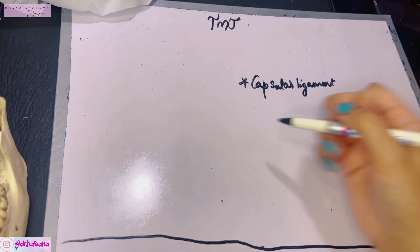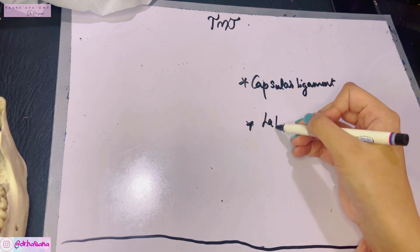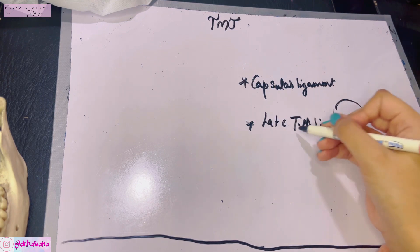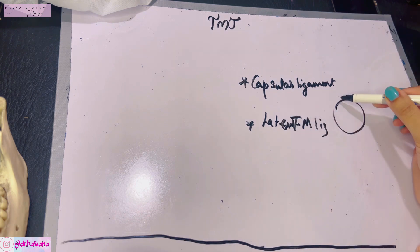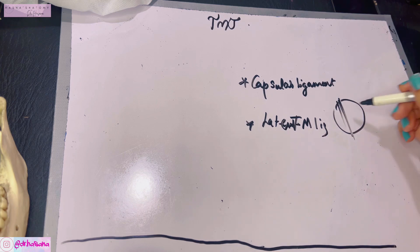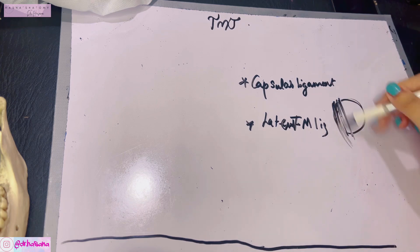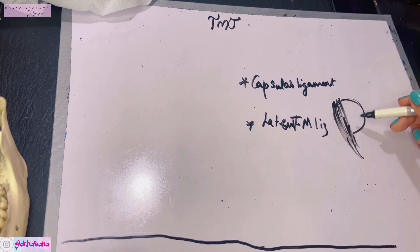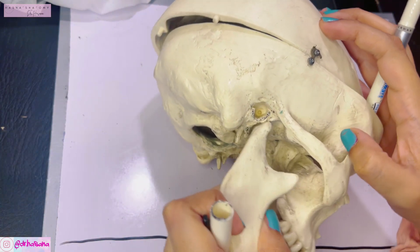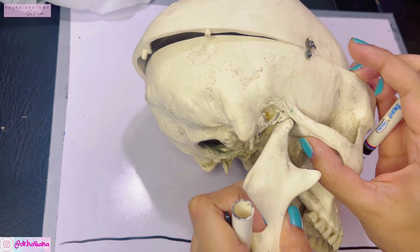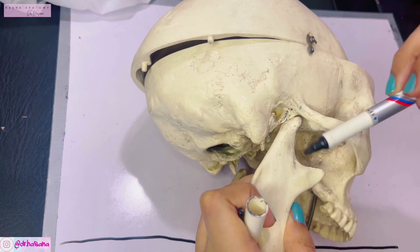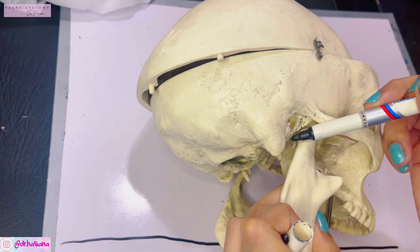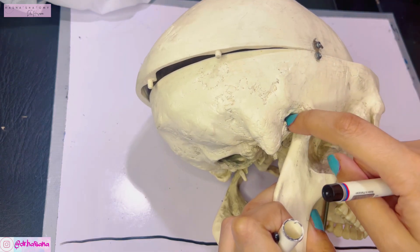We also have the lateral ligament of the TMJ, also known as the lateral temporomandibular ligament. This is a very important ligament because it posteriorly strengthens the TMJ. It is attached above to the articular tubercle and below to the neck of the mandible, running downwards and backwards.